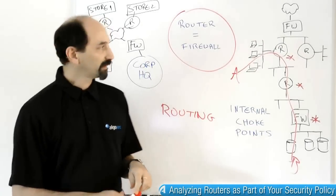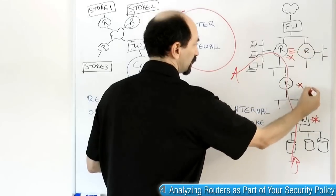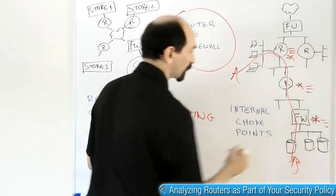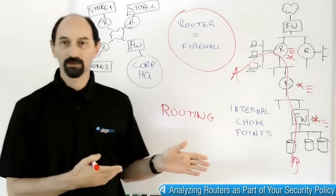And then you need to make sure that the access lists on these devices, over here and over here and of course on this firewall, are allowing the traffic that you need to allow.